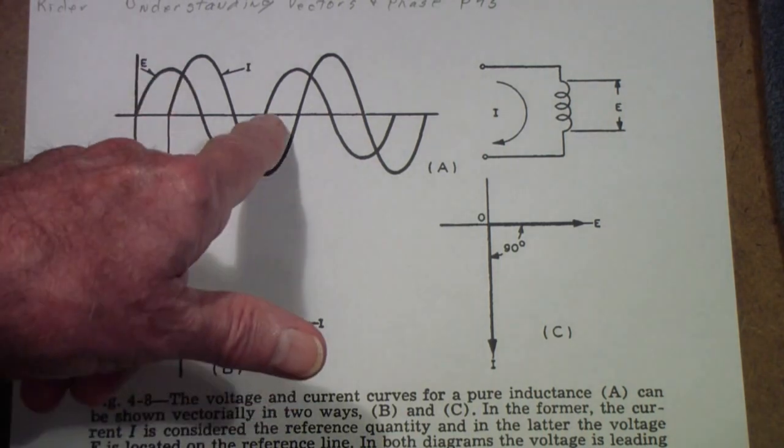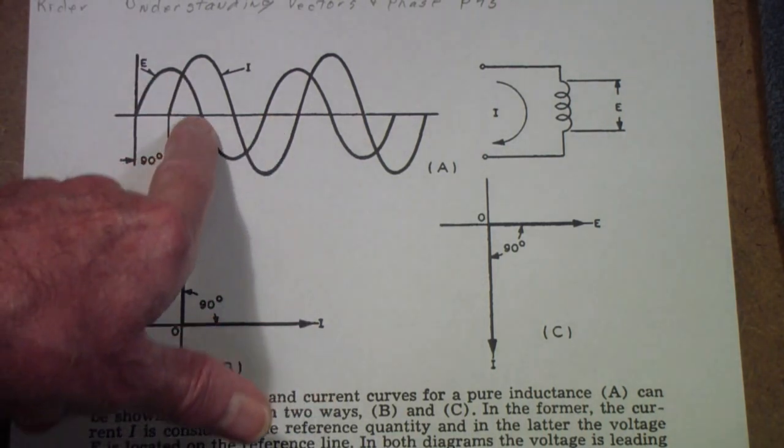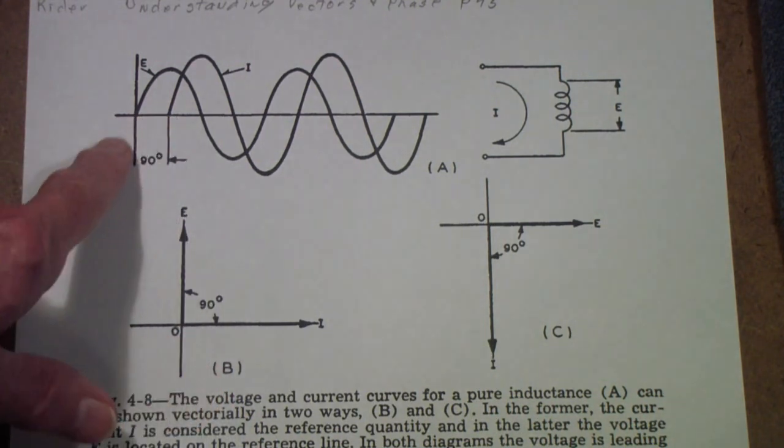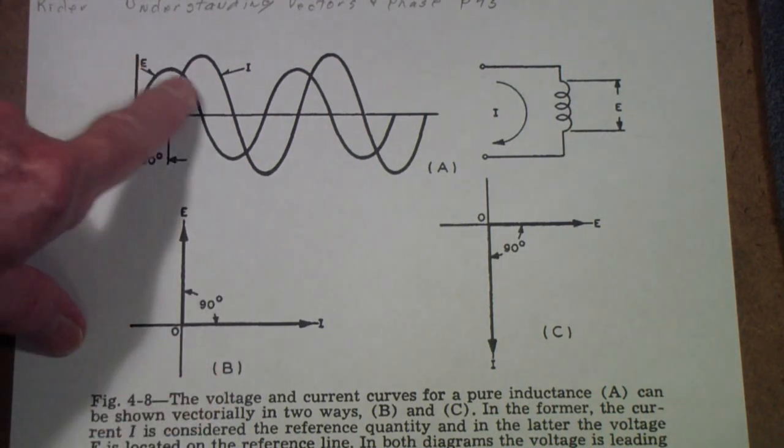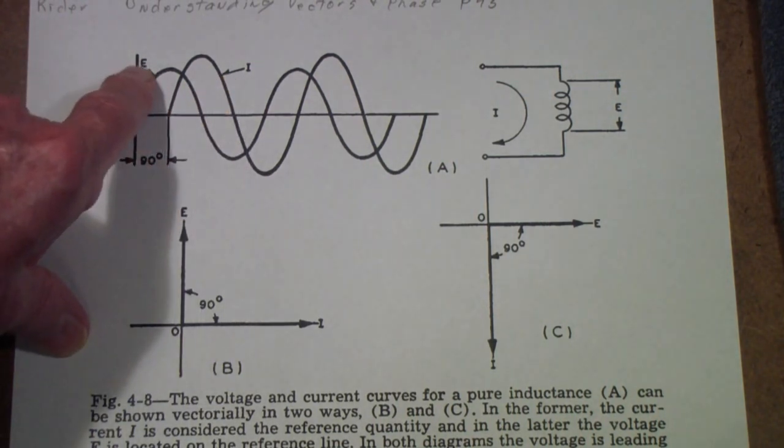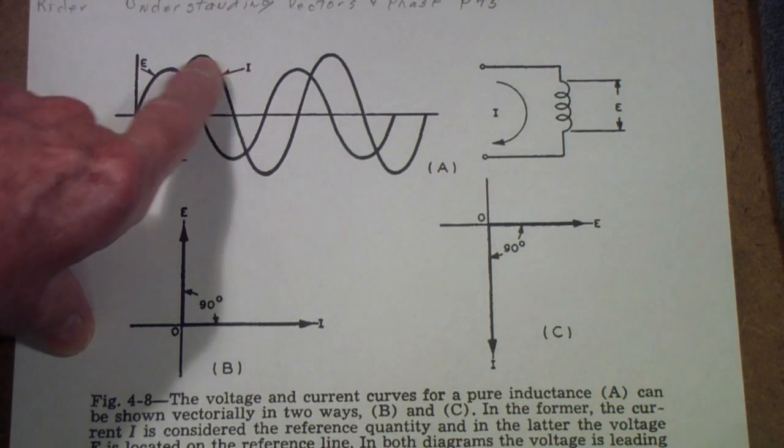no matter what frequency you apply to the inductor, the voltage across the inductor and the current through it will be 90 degrees out of phase. Now, of course, an entire cycle is 360, a half cycle is 180, and a quarter cycle is 90. So, the voltage leads the current in an inductor. E, L, and then I, Eli.